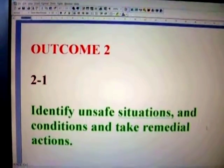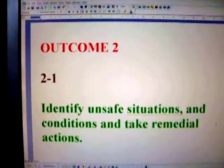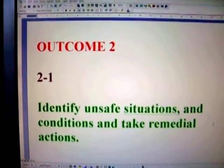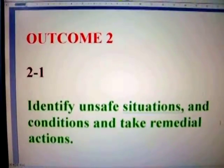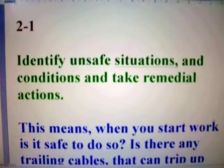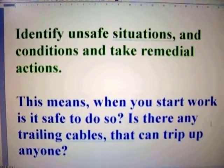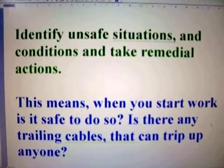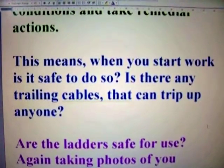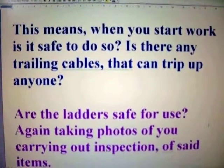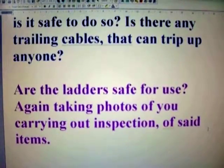Welcome back. We're looking at Outcome 2-1, which is about identifying unsafe situations and conditions and taking remedial actions. This means that when you start work, you need to ask: is it safe to do? Are there any trailing cables that can trip you up or anyone else? Are the ladders you're using safe? Have you looked around to ensure there is no danger to yourself or anyone else?